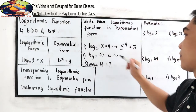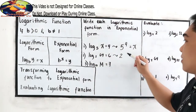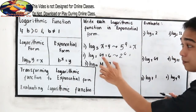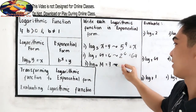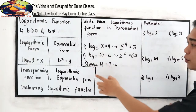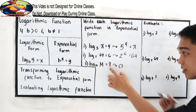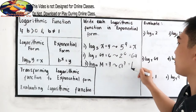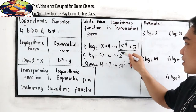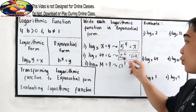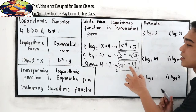Number two: our b here is 2, so b raised to 6 is equal to 64 — that is 2 raised to 6 is equal to 64. Number three: our b is a, so a raised to 7 is equal to m. As simple as that.